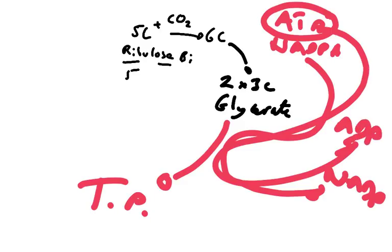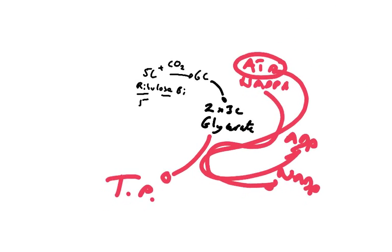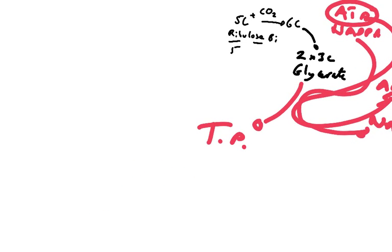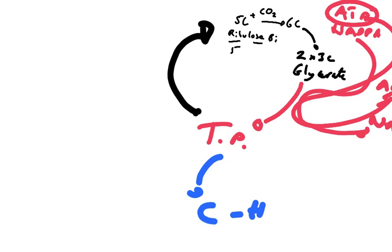Now, the triose phosphate gets used to make glucose, sucrose, amino acids, DNA, RNA—everything in your body and in the plant that has a carbon-hydrogen bond is made from this triose phosphate. But 99% of it gets used to make more RuBP.